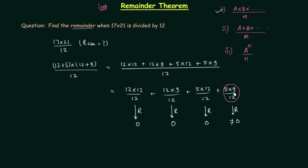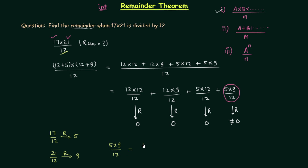How did we obtain this last term? It is simply the remainder when 17 is divided by 12 and when 21 is divided by 12 individually. When you divide 17 by 12 the remainder is 5, and when you divide 21 by 12 the remainder is 9. Since 17 and 21 are multiplied, we multiply the remainders: 5 multiplied by 9, divided by 12, which equals 45 divided by 12.